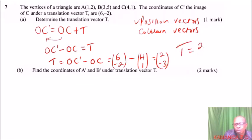Translation vector equals (2,-3). And what does that mean? It means that when you are at C, to get from C to C', you move 2 units along the x-axis and 3 units along the y-axis in the negative direction. That is what translation vector means.